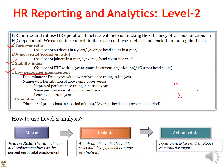For Level 2 metrics, insights, and action points: the ratio of new and replacement hires as a percentage of the organization indicates hidden costs when high, detrimental to productivity. A higher joiner rate means more training and recruitment costs. The action plan is to focus on new hire and employee retention strategy — give proper wages, incentivize them, and take good care of them so they stay.